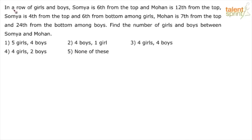In a row of girls and boys, Swamya is 6th from the top and Mohan is 12th from top. Swamya is 4th from the top and 6th from bottom among girls. Mohan is 7th from top and 24th from bottom among boys. Find the number of girls and boys between Swamya and Mohan. Different options have been given to us.